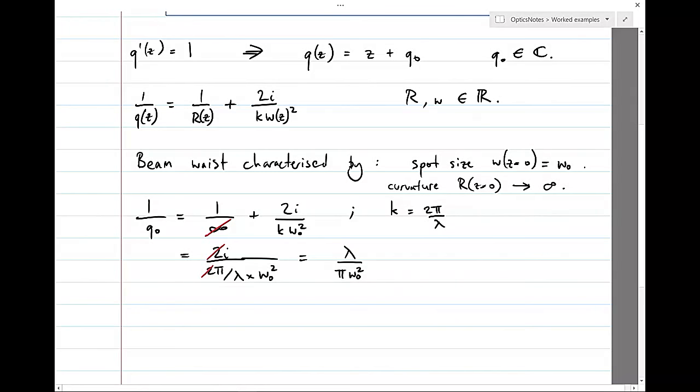So if we rewrite this second term of the expansion here, we're going to get 2i divided by 2 pi over lambda times W0 squared. The twos cancel. I have to bring the lambda on top and I get lambda on pi W0 squared. If you've been paying attention, you'll notice that this is the characteristic scale over which the wave field changes. It's the Raleigh range, or the reciprocal of the Raleigh range. I missed a factor of i there.